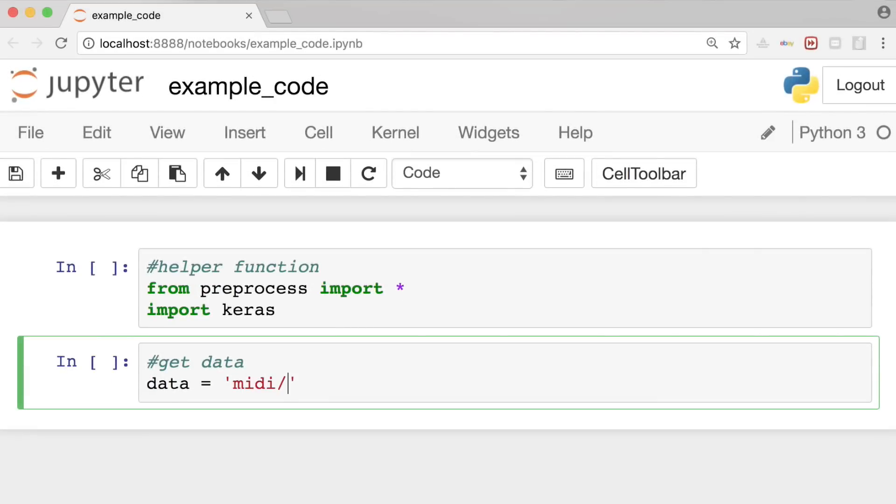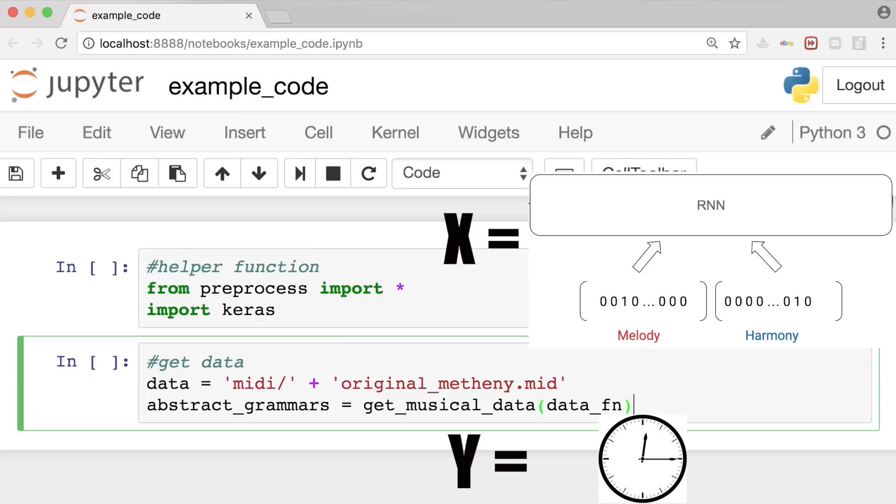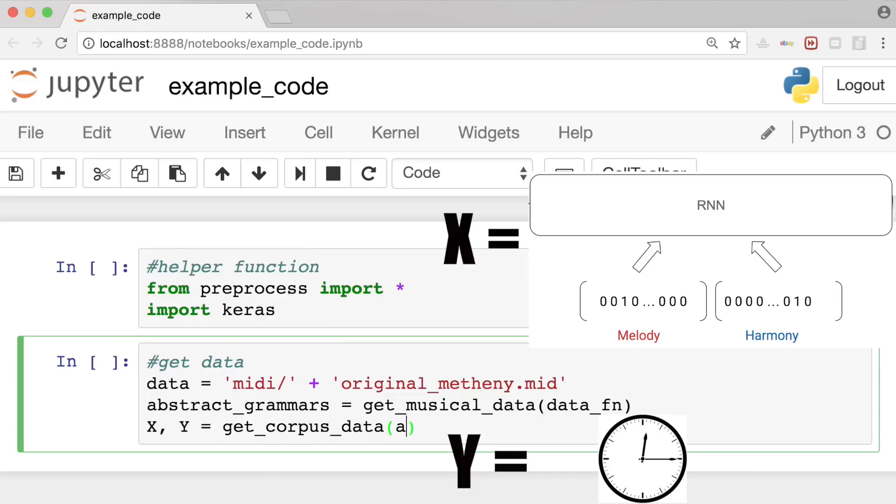Then we'll group them all together by measure number. So each measure has its own grouping of chords, and this measure-chord pair is what we'll call our abstract grammars. We'll vectorize these inputs by converting them into binary matrices so we can feed them into our model.